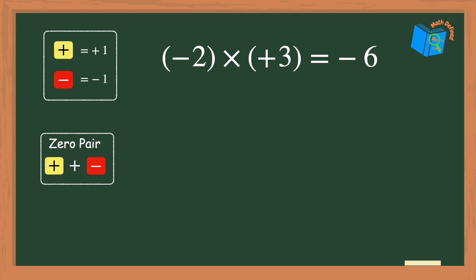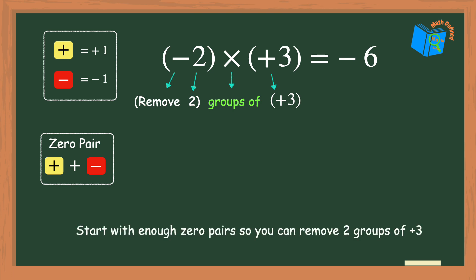Okay let's start by writing the math sentence using words. The negative 2 stands for remove 2. The multiplication sign means groups of and the positive 3 is just positive 3. Here again I don't have any counters to remove so I will need to ignore the negative sign for a moment and use zero pairs to represent two groups of 3.